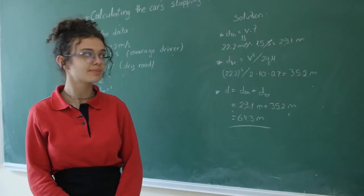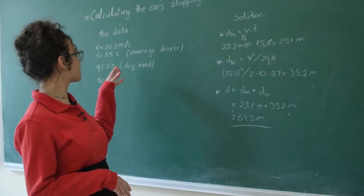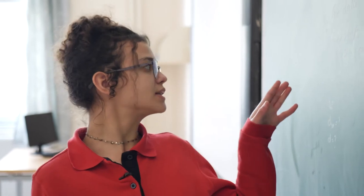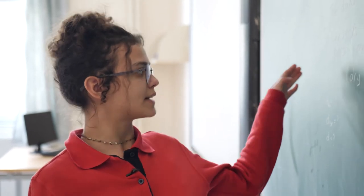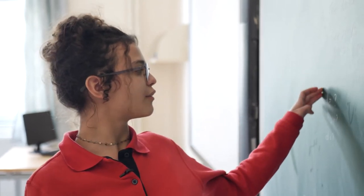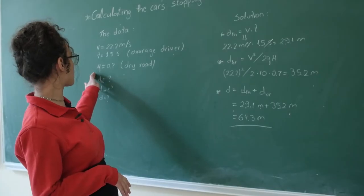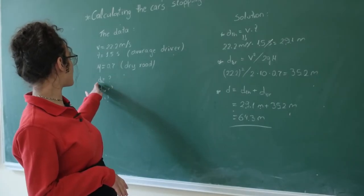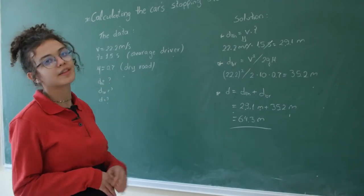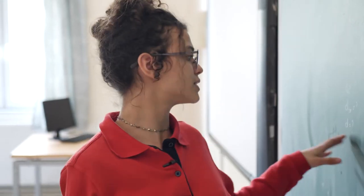Here is an example of calculating a car's stopping distance. Here are the data of the car: the velocity, the time taken, the friction coefficient — and we have to find the thinking distance, braking distance, and the stopping distance.